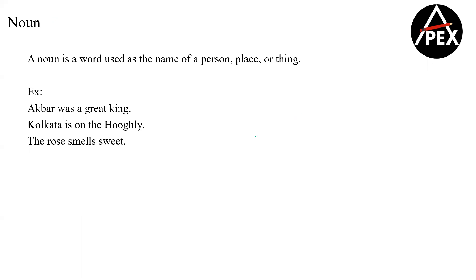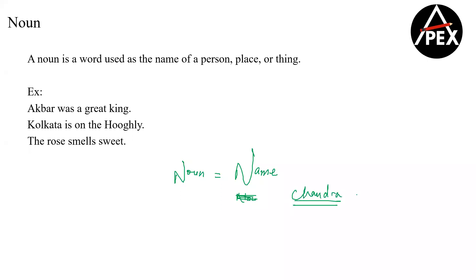Very specifically, very easily speaking, a noun is a word that's used as a name of anything. I want you to remember: noun equals to name. Whose name? It does not matter. For example, if I give you the name Chandra — I am only giving this name to one person. So this name I am giving to one proper person — this will become a proper noun.